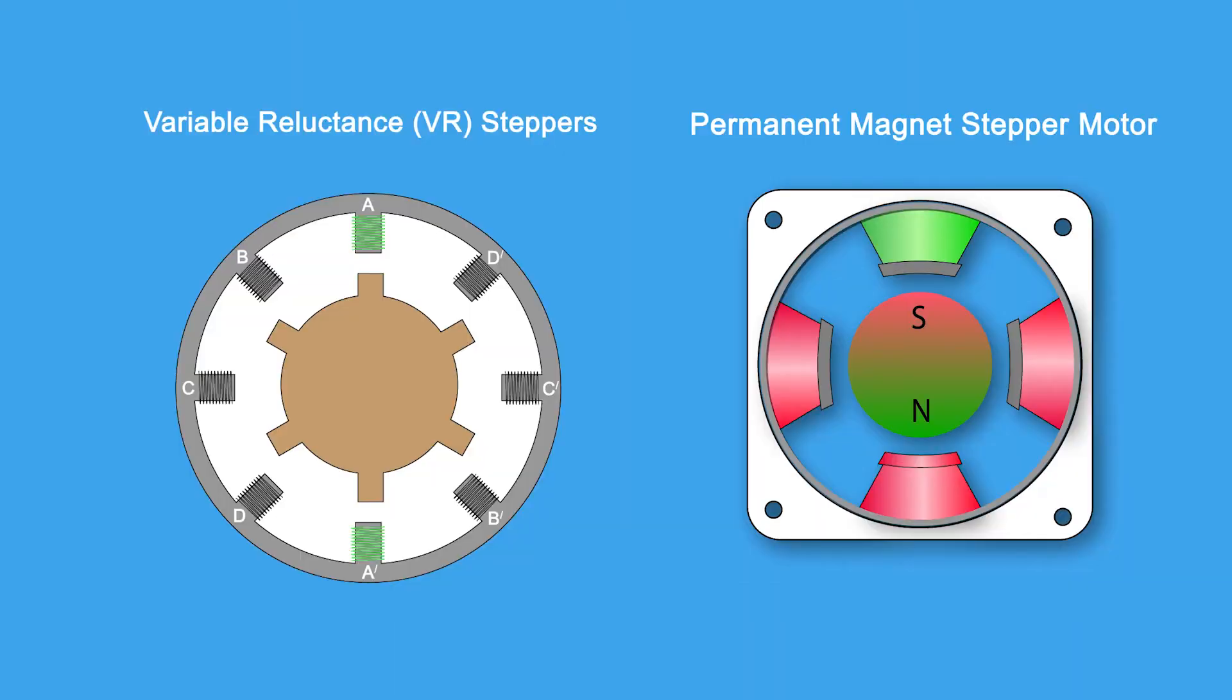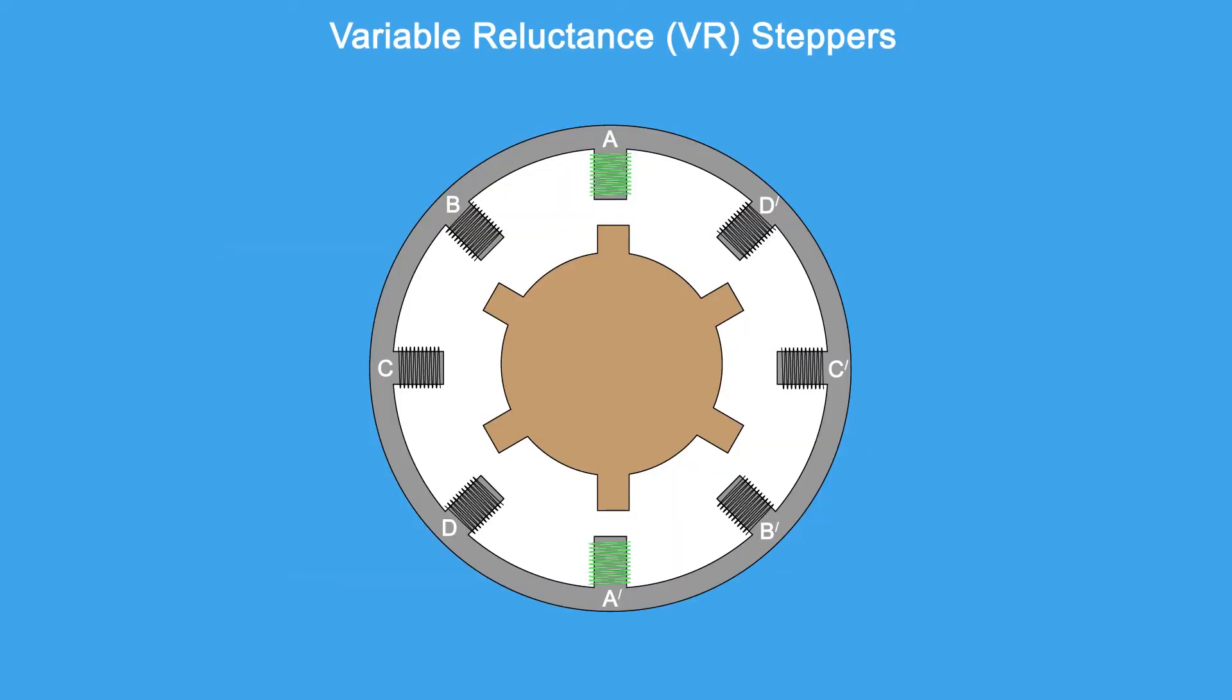Working principle of variable reluctance stepper and permanent magnet will be shown to see differences and similarities with hybrid step motor. With variable reluctance stepper, as illustrated in the video, only one pair of teeth is aligned with the windings at any time. When the controller energizes a second pair of windings, the rotor turns so that different pair of teeth will be aligned.